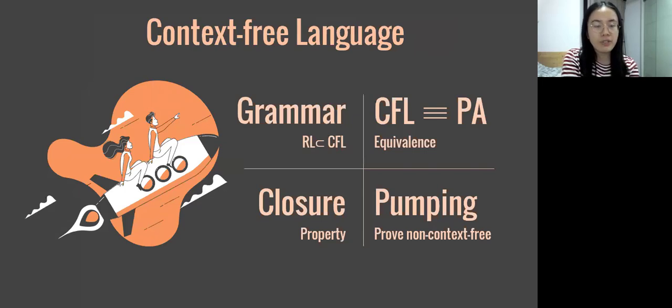A context-free language refers to a language that can be generated by a context-free grammar. Here, I list four things that we care most about context-free language: the grammar itself, the equivalence of CFL and PA, the closure properties, and the context-free language version pumping theorem.